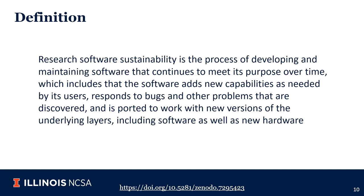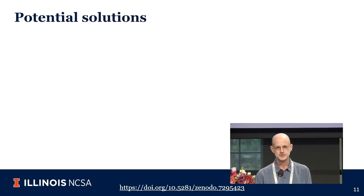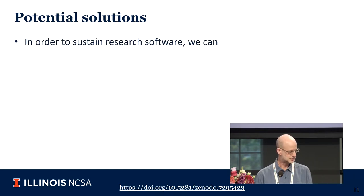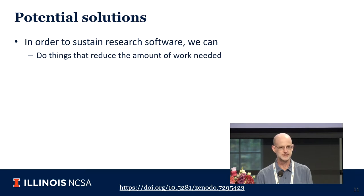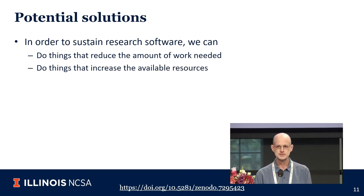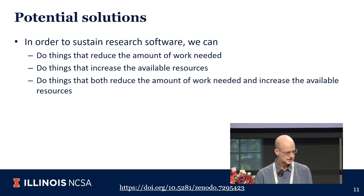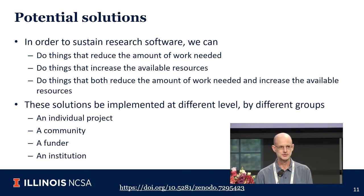If we agree that software sustainability is a problem, there are three different kinds of solutions: we can try to reduce the amount of work needed to sustain the software, increase the available resources going into sustaining it, or do both. These solutions can be implemented at different levels by different kinds of participants: what an individual project can do, what a community can do, what a funder can do, and what an institution can do.